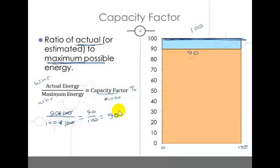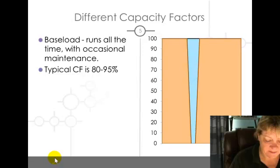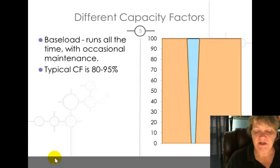Ninety percent, right? Pretty simple. But it gets more complicated because plants don't operate like that. There's different kinds of plants that operate different ways. We'll get into that in another discussion, but for this video we're just going to talk about the different capacity factors and how they look.